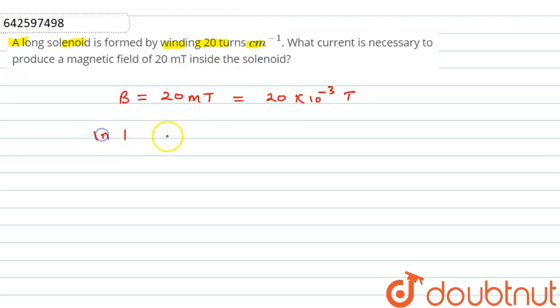And here are given that in one centimeter there are 20 turns. This is the value of n.